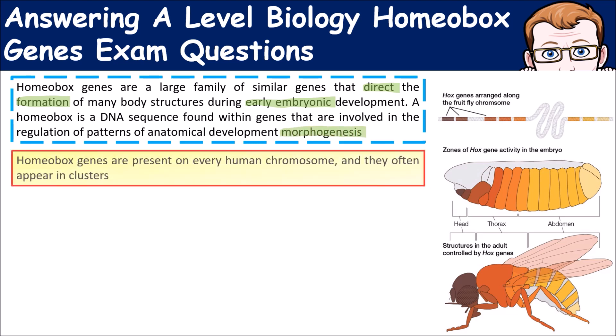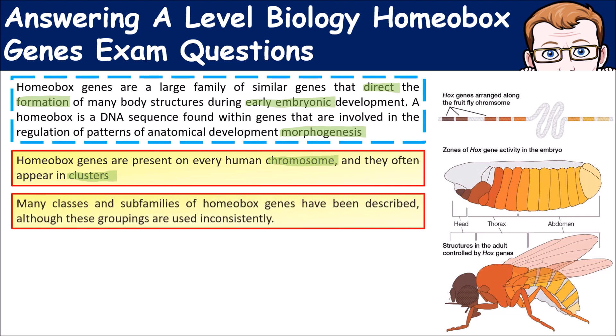Homeobox genes are present in every human chromosome and often appear in clusters, so there are many classes or sub-families of homeobox genes, which are described and grouped in a number of different ways.